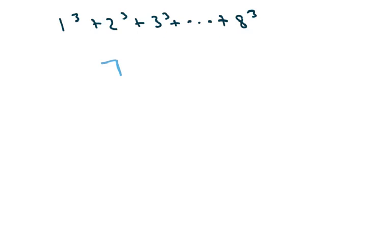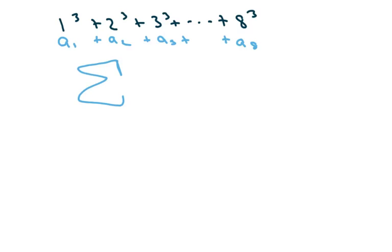Now in this one, I'm going to write the summation notation. This is like a(1) + a(2) + a(3) + ... + a(n). The last term is a(8), so we're going from k equals 1 to 8. All of these are the same — the cubes — so this is just going to be k cubed.